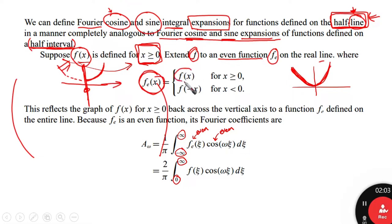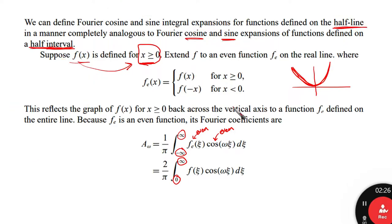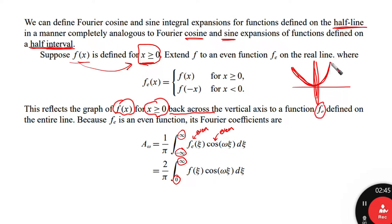The even extension f_e equals f(x) when x ≥ 0, and equals f(−x) for x < 0. This reflects the graph across the vertical axis. So we now have an even function defined on the entire real line, just as we discussed before for Fourier series.